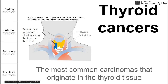This is a brief video on thyroid cancers, the four main types. We're going to be talking about the most common four carcinomas that originate in the thyroid tissue. We have a picture here of a tumor that has grown into a blood vessel, a tumor that has started spreading from the thyroid.